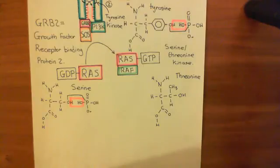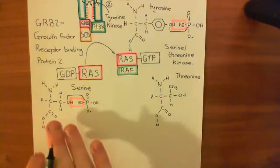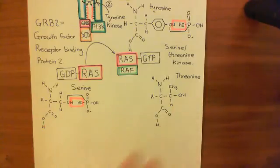RAF was going to be a serine-threonine kinase, so it was going to add phosphate groups onto serine and threonine amino acid residues in proteins.